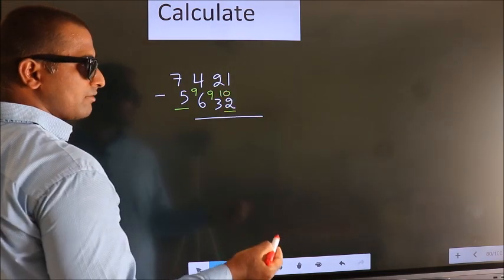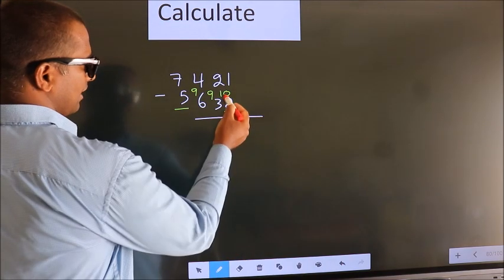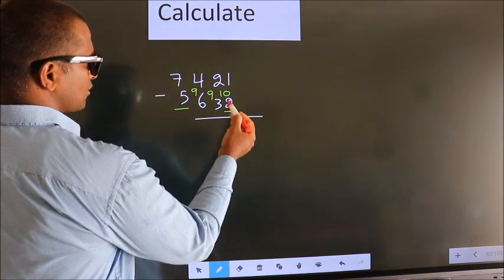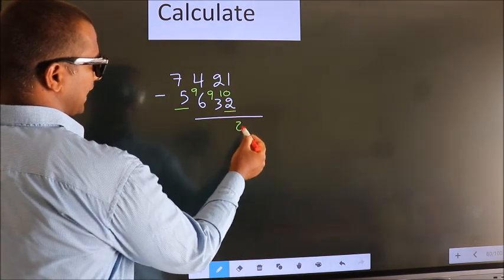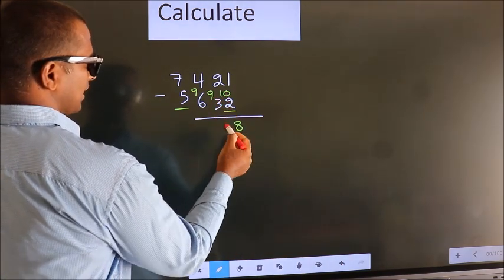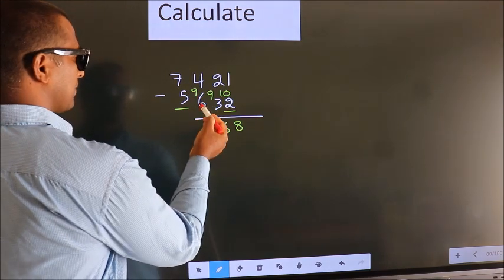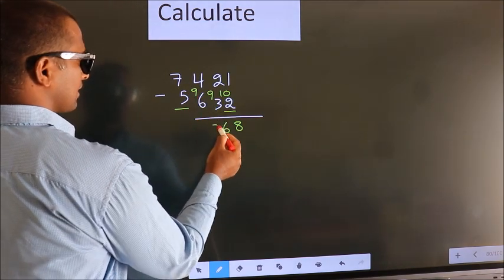Now we subtract: 10 minus 2 is 8, 9 minus 3 is 6, 9 minus 6 is 3.